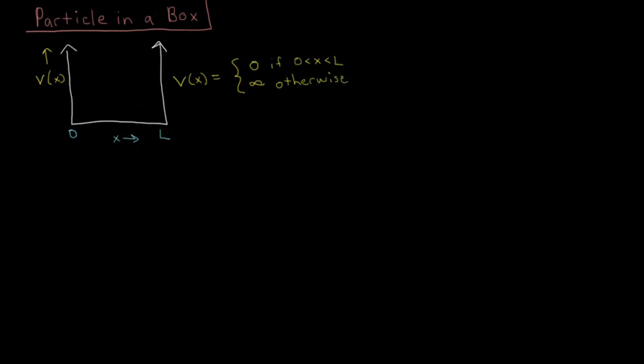So in order to solve the Schrödinger equation, let's remind ourselves, is just going to be H psi equals E psi, psi being the wave function, H being the Hamiltonian operator, and then E being the total energy of the particle. This being an eigenvalue problem that we discussed.